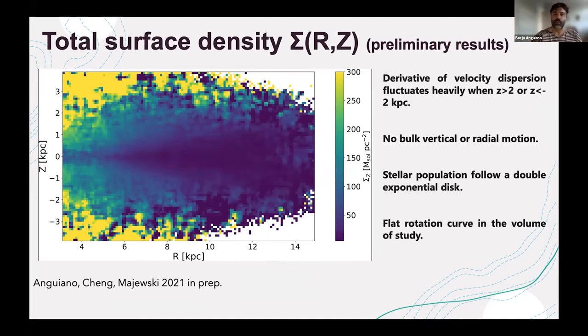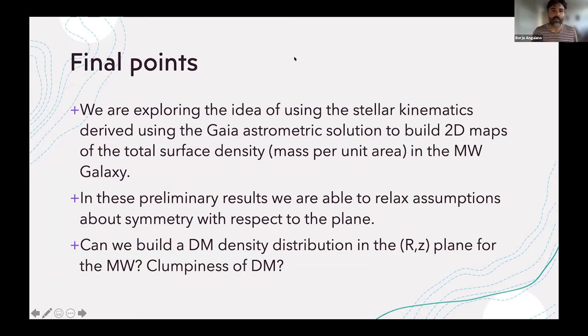I still make some assumptions. For example, the derivatives of the velocity dispersion fluctuate heavily when I'm moving outside. We are running out of stars. Also I am assuming a flat rotation curve in the volume of study. But this is the idea I have for this exercise and it looks like I can get something useful out of that. Because I'm thinking I'm running out of time, I leave you just with these final points. Thank you so much.